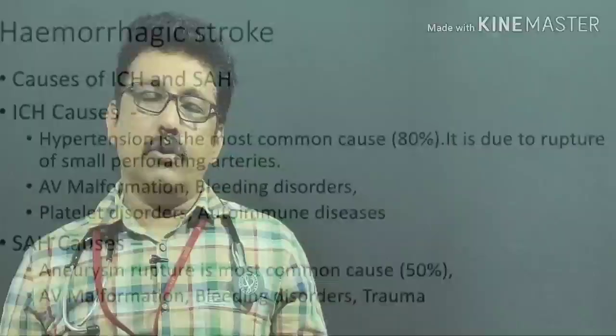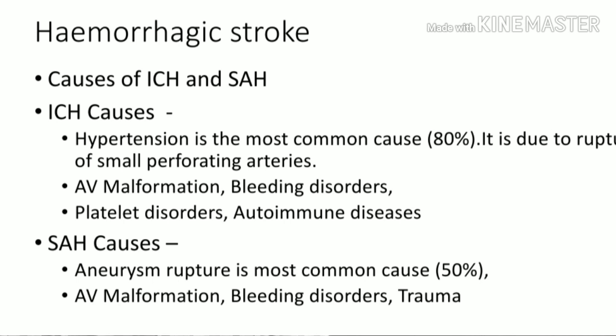Hemorrhagic stroke involves bleeding in the brain, either as intracerebral bleed or subarachnoid hemorrhage. Intracerebral bleed is mainly due to hypertension — 80% are caused by rupture of small perforating arteries from high BP. AV malformation, bleeding disorders, platelet dysfunction, and autoimmune disease can also contribute. Subarachnoid hemorrhage is mainly due to aneurysm rupture, accounting for 50% of cases, with AV malformation, bleeding disorders, and trauma as other causes.